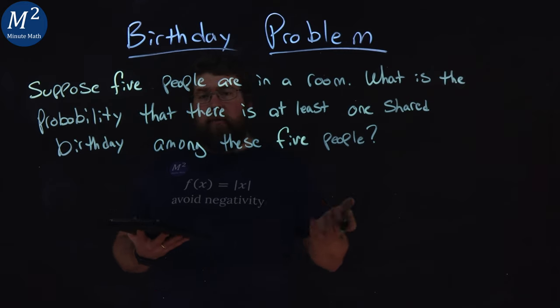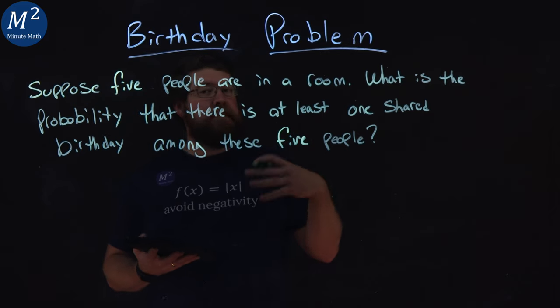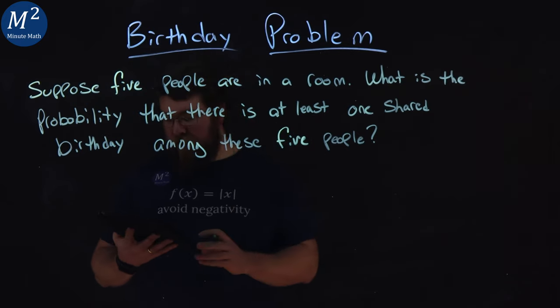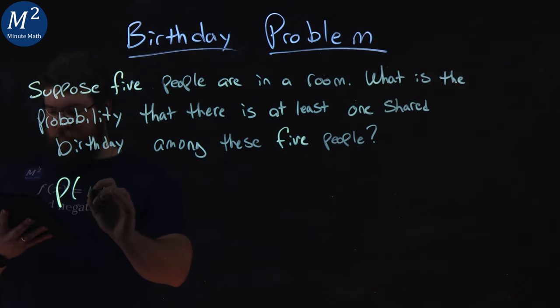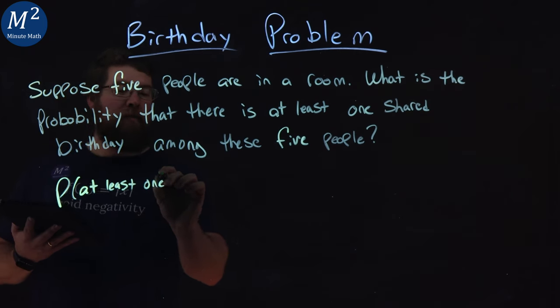If you remember from the previous example, we talked about finding at least one. The opposite of that is that no one shares a birthday, and that becomes easier to calculate. So the probability that we have at least one out of these five